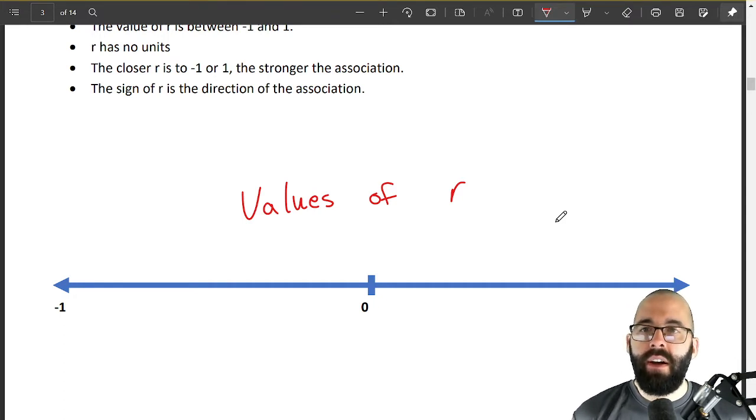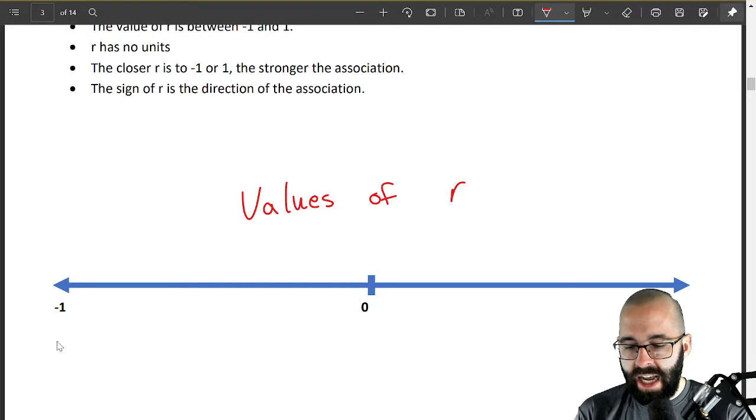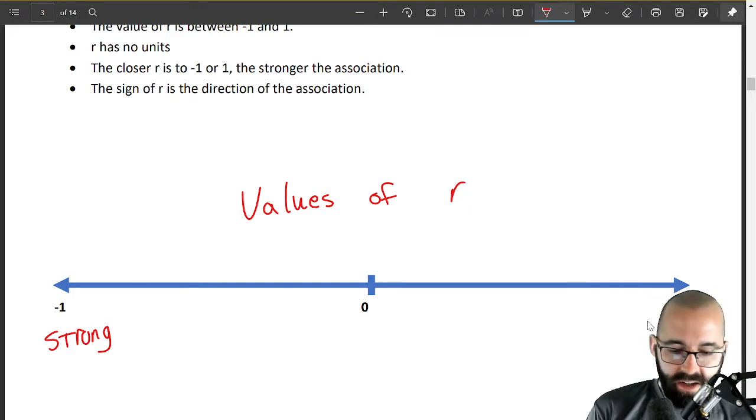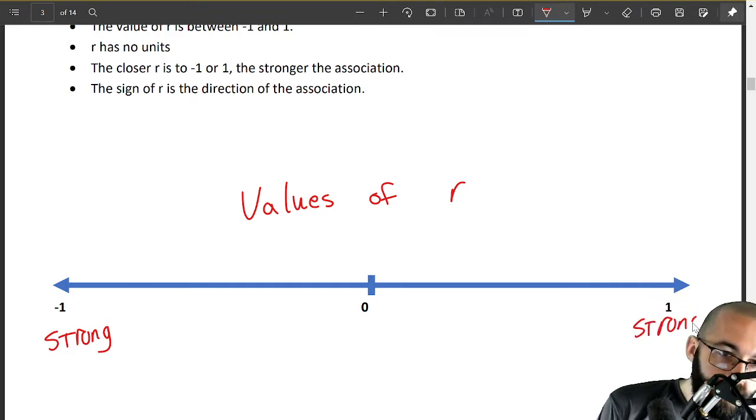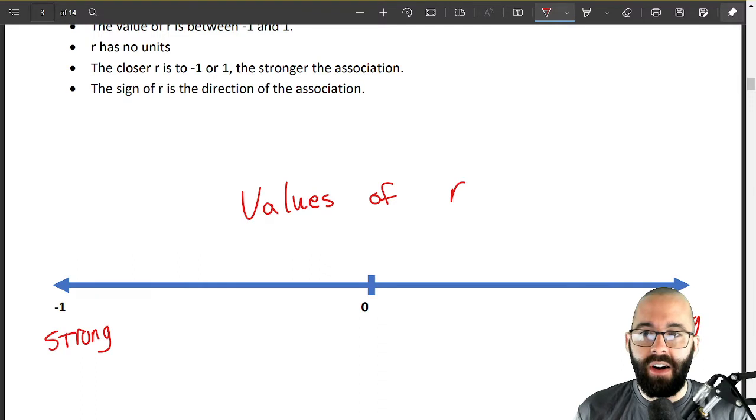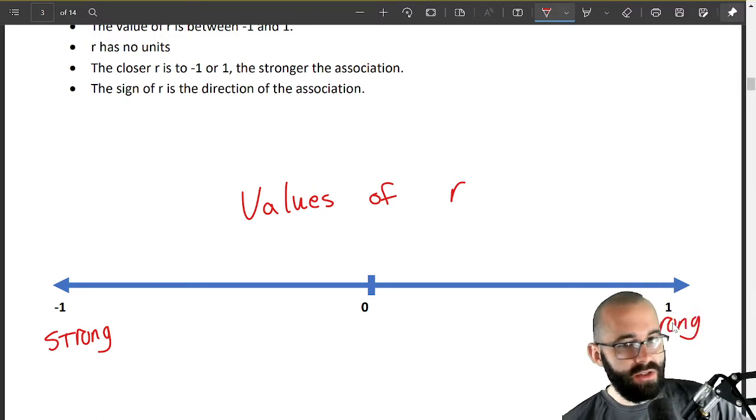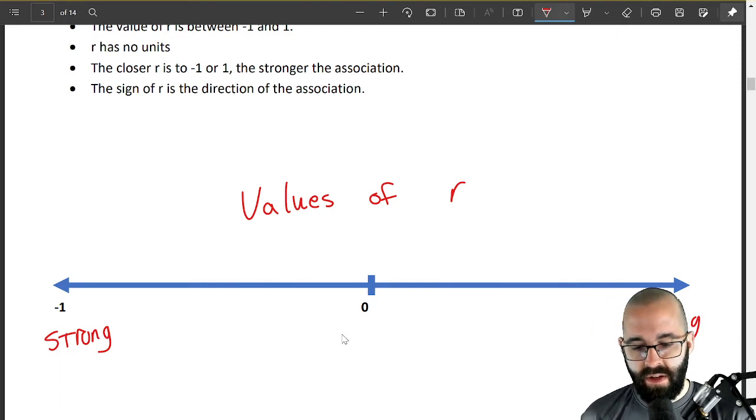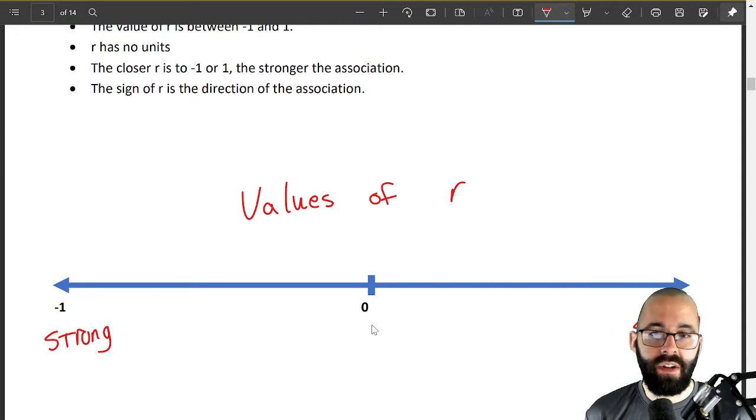So on the outsides, right, if we're over here, strong correlation. Over here, it's also strong correlation. How big r is, the magnitude of r, really close to negative one, strong correlation, really close to positive one, also strong correlation. But then it's weak near the middle, and in fact there's no correlation if it were zero.